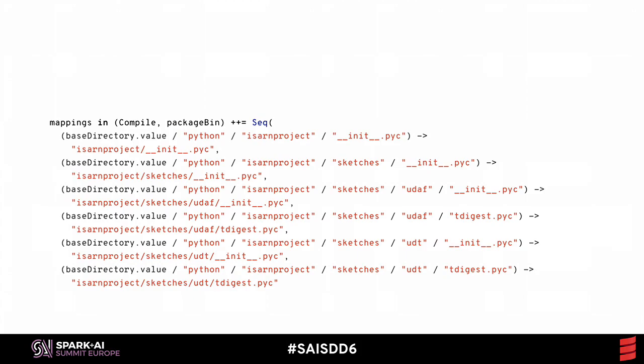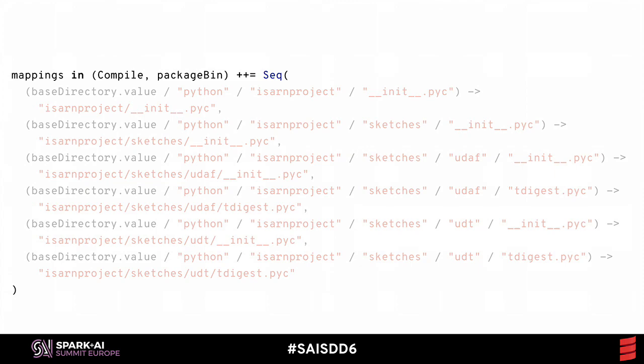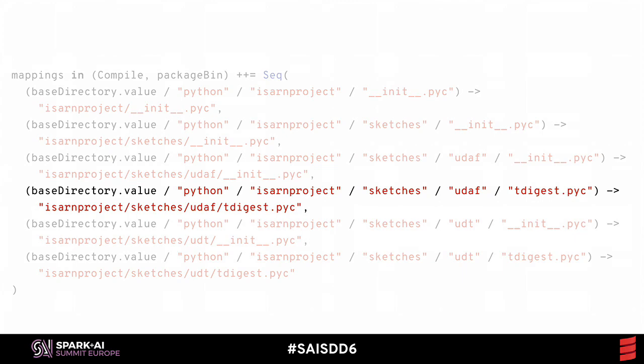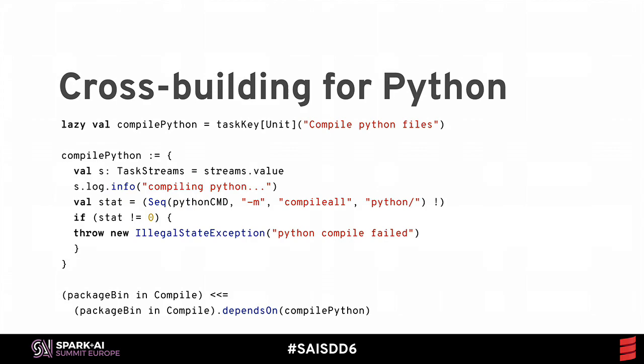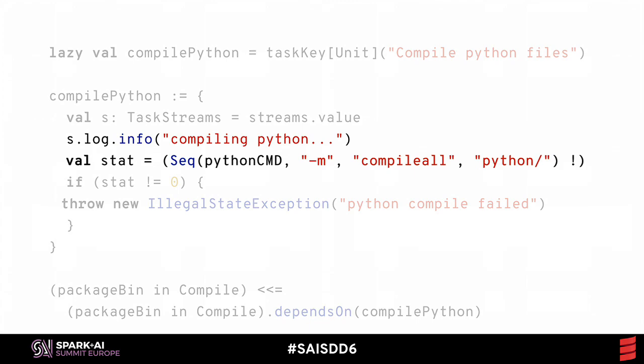In the SBT build system, I add a custom file mapping for compilation and packaging. I map all my compiled .pyc files from my repo into a corresponding jar path. At each level of this path, I have to have the __init__.pyc files that Python expects, even though in this case they're basically all empty, and my actual source files appear in those leaf directories. I also have to teach SBT how to actually compile Python, so I create a custom task for compiling Python files and fill it in with the actual commands for invoking the Python compiler.